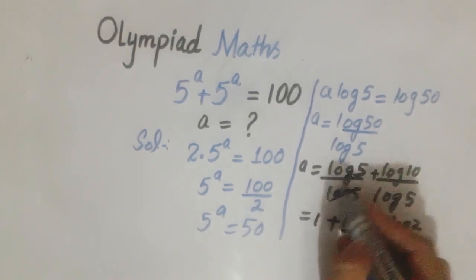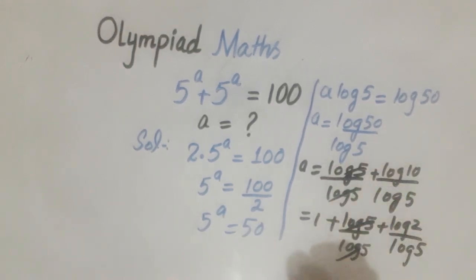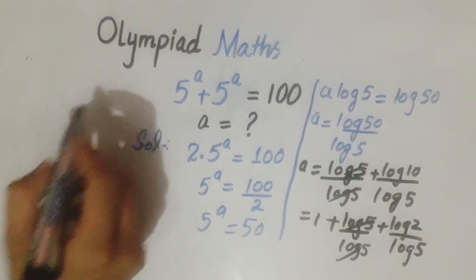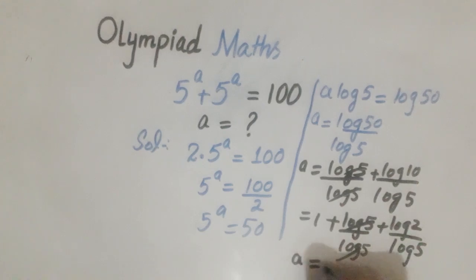After simplifying, we have a equals 1 plus log 10 divided by log 5. Since log 10 can be written as 1 plus log 2, we get a equals 2 plus log 2 divided by log 5. Applying the change of base rule, this becomes 2 plus log base 5 of 2.